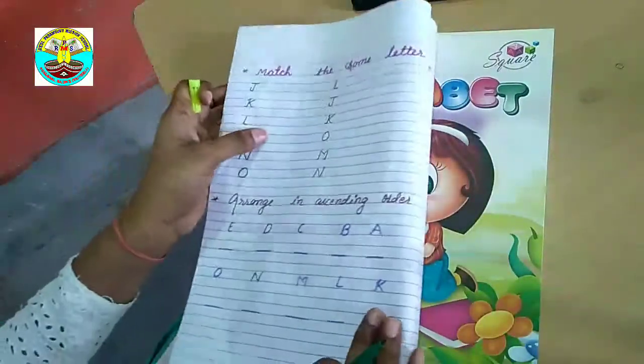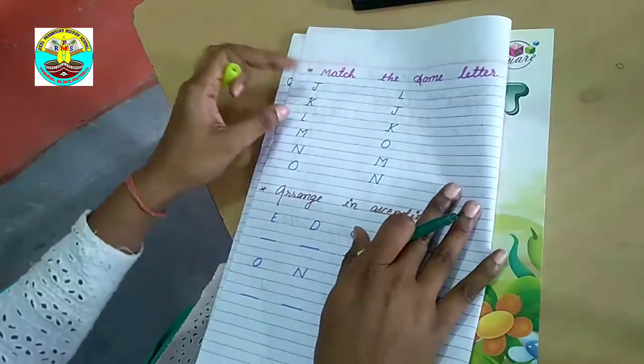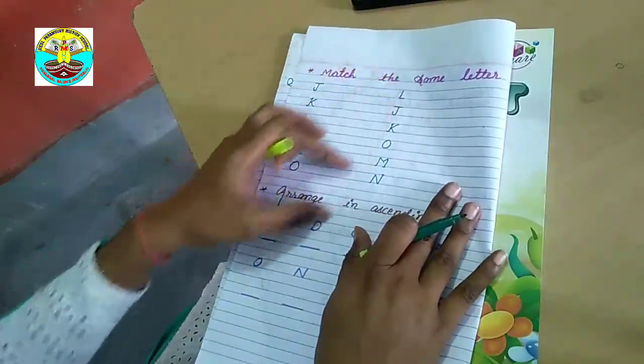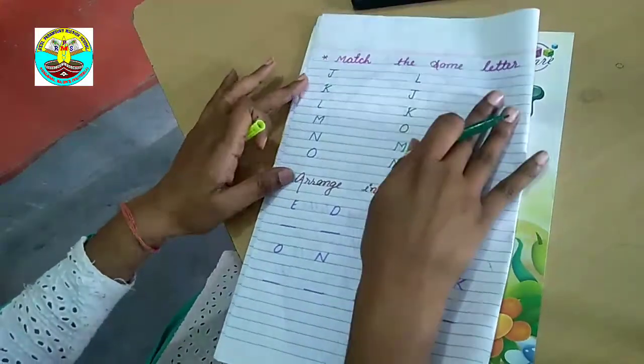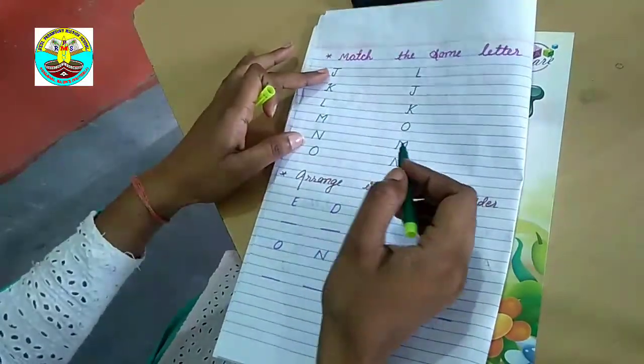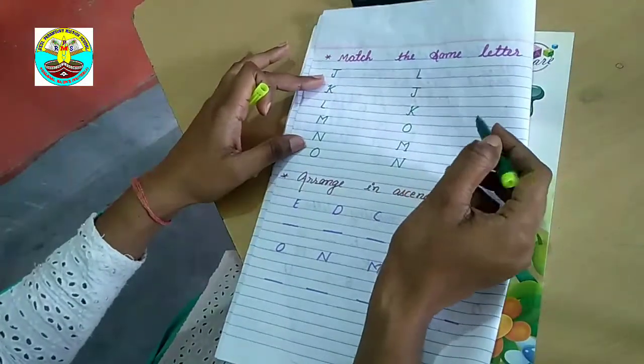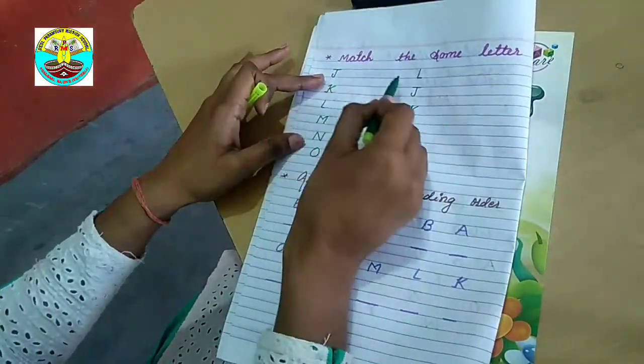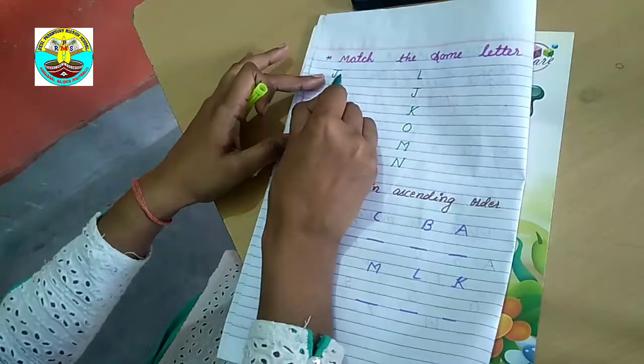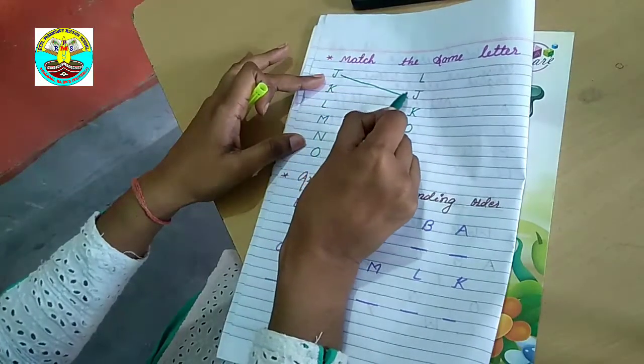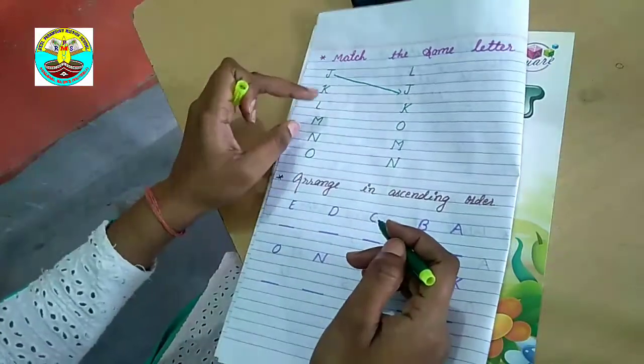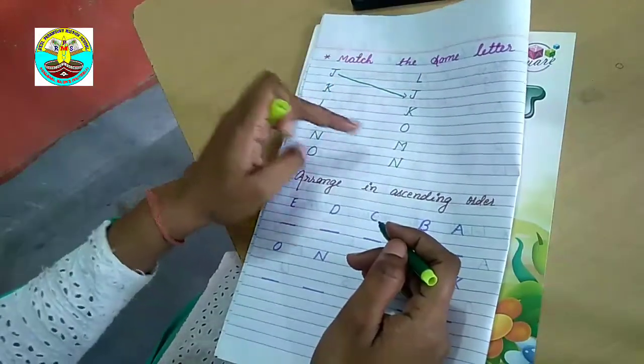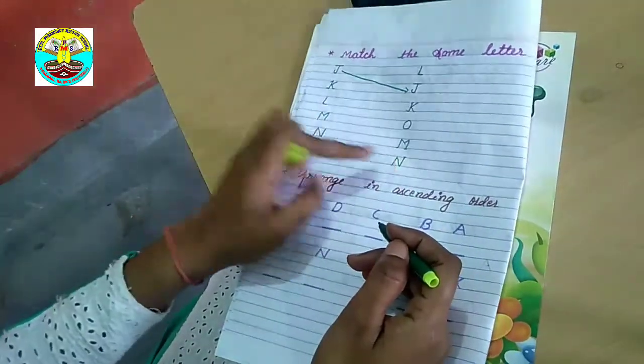Next worksheet is match the same letter. I have a letter and the same letter to match. We will look at this side and match. The first one we will match. Second number is J, so we will match this like this. Then K to K to match, L to L, M to M, N to N, O to O.